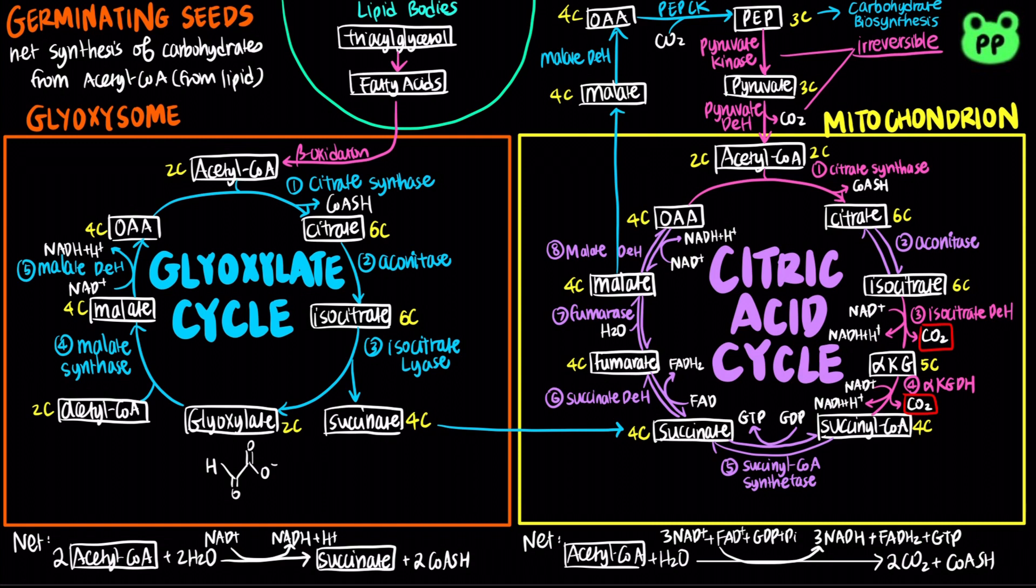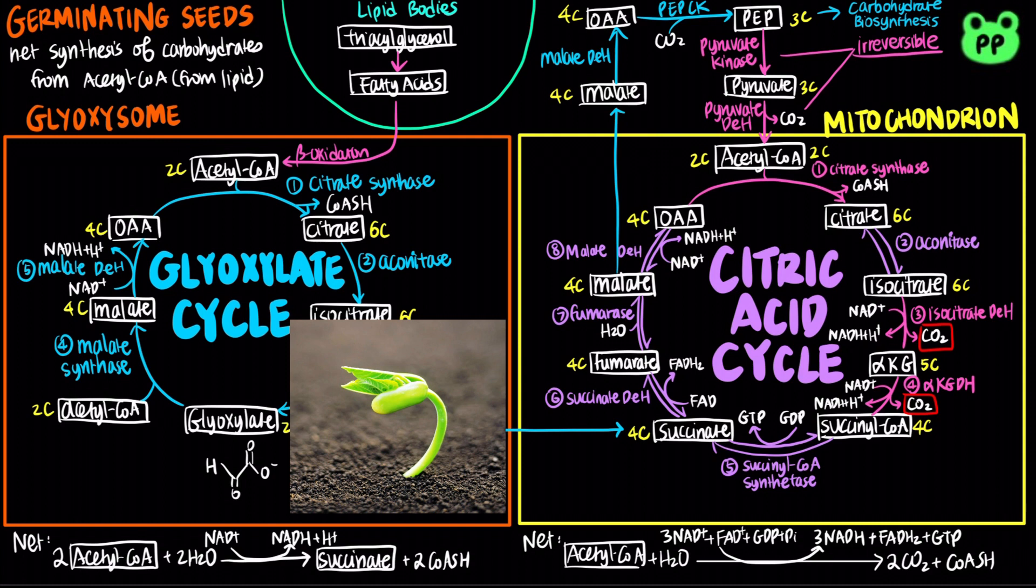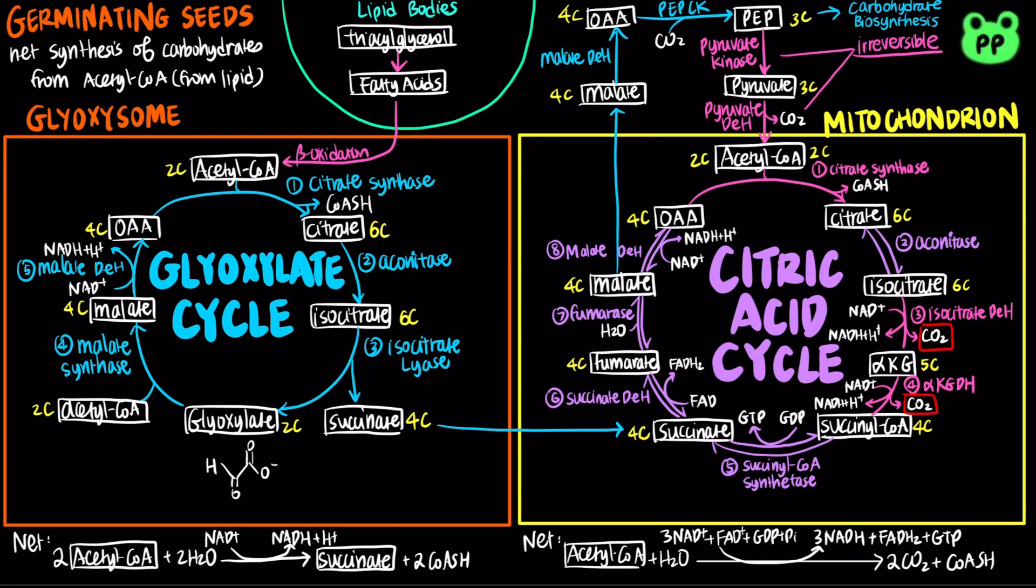The glyoxylate cycle can only occur in germinating seeds of plants and some other microorganisms. Vertebrates cannot synthesize glucose from acetyl-CoA derived from fatty acids.